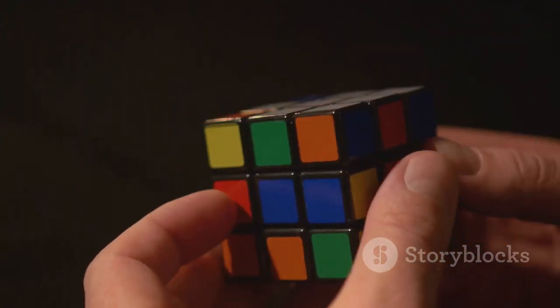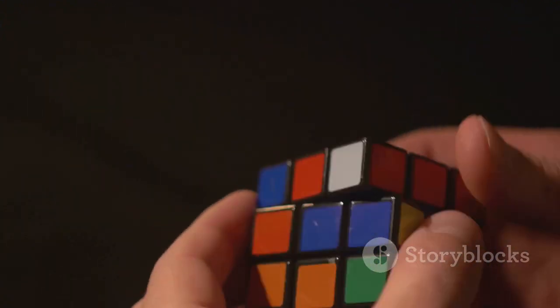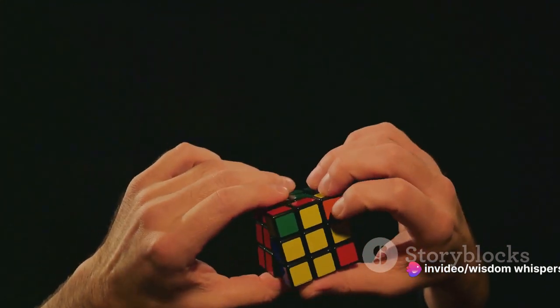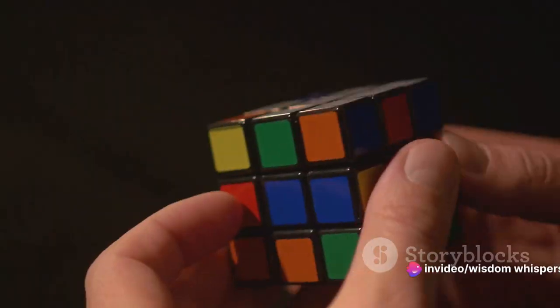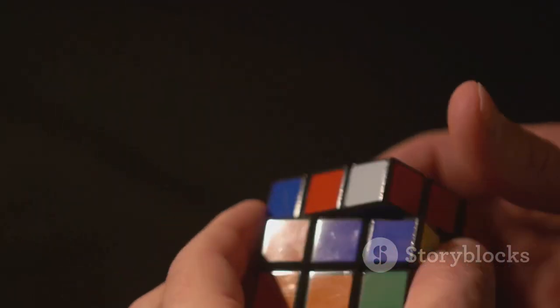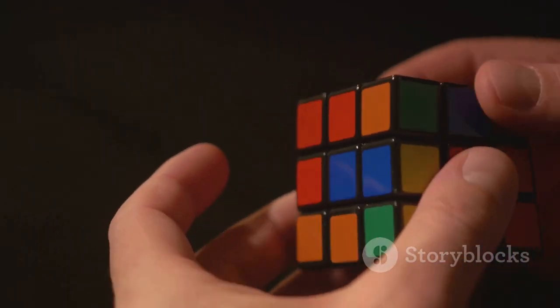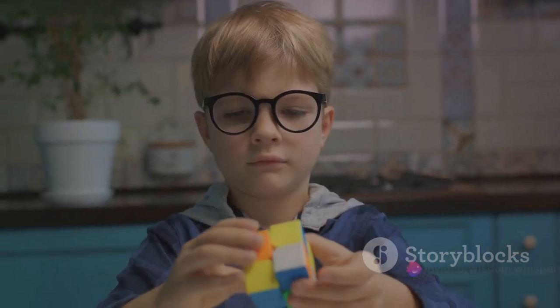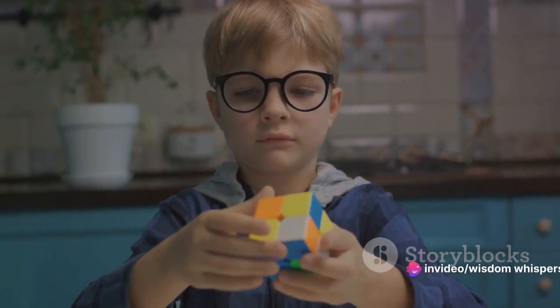You might see a dot, an L shape, a bar, or the cross itself. Each of these formations is a step closer to forming the cross. If you get the dot, don't sweat it. It simply means you're a couple of moves away from the L shape which then leads to the bar, and finally, to the cross. Remember, it's all about patience and perseverance.